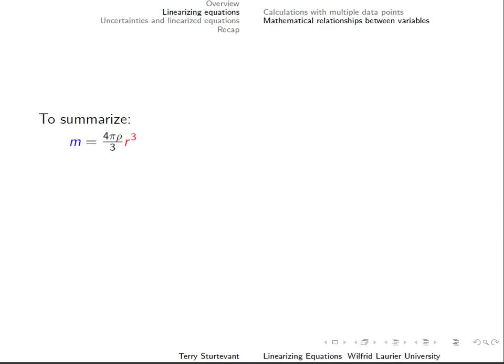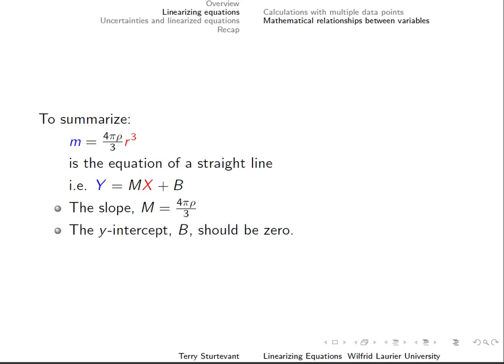So, if we plot mass versus radius cubed, then the slope will be 4 thirds pi times the density. The y-intercept should be zero.